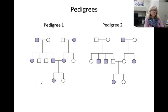Pedigrees can help you determine whether a trait is dominant or recessive. In pedigree one, two affected individuals have an unaffected daughter. This indicates that the trait is dominant. If it were recessive, both parents would have to be homozygous and all their offspring would show the trait.